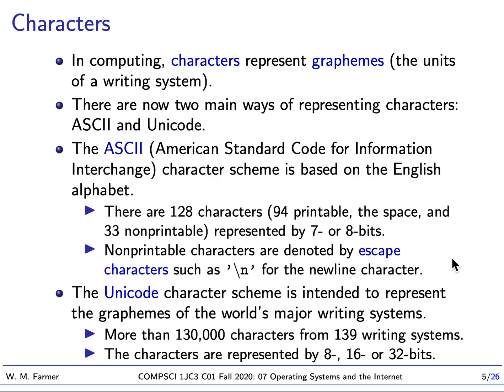There's a different, more universal approach called Unicode. Unicode is intended to represent the graphemes of basically any of the world's writing systems. There are more than 130,000 characters from 139 writing systems, and these characters are represented by either 8, 16, or 32 bits. In everyday computer work, people usually use ASCII, but when doing something with public interaction, Unicode is typically used.